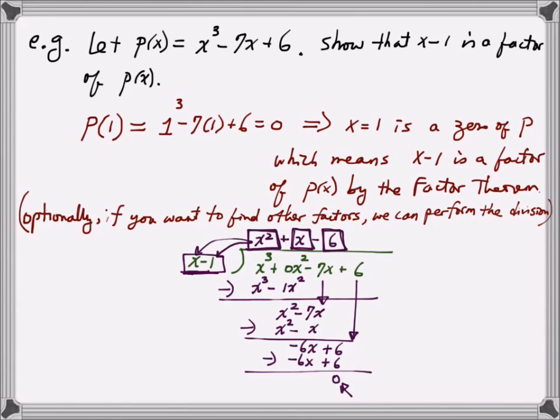So this actually verifies that it is a factor. This means I can write my original polynomial p as the factor x minus 1 times this quotient, which is x squared plus x minus 6.